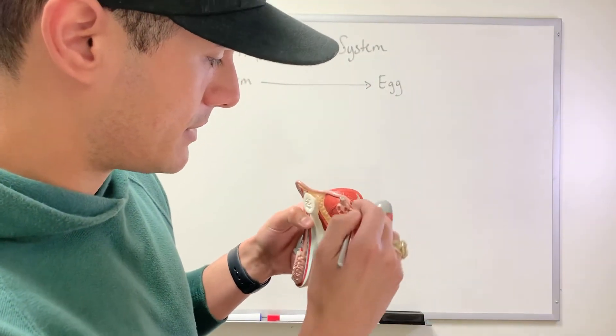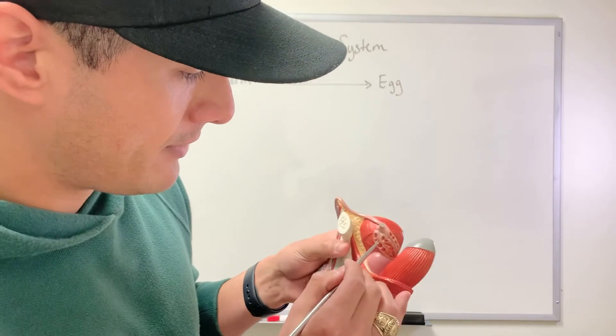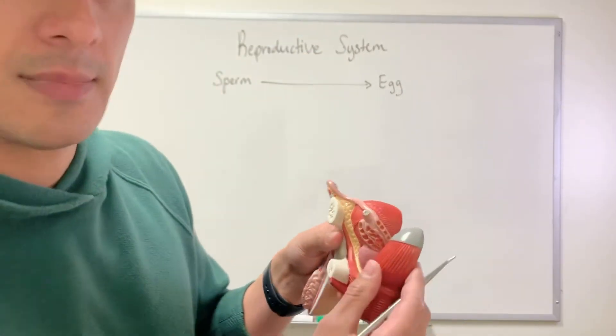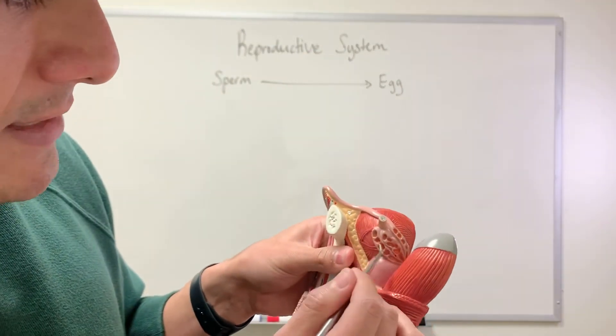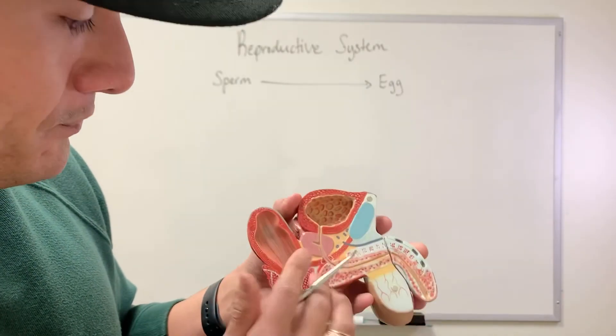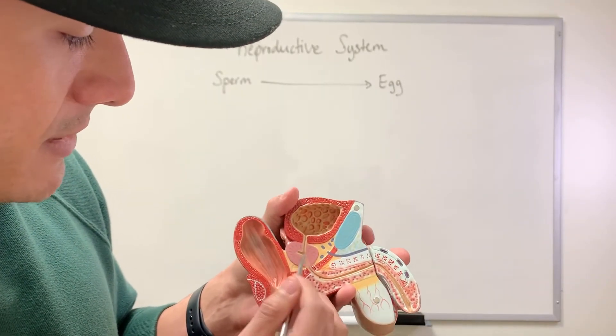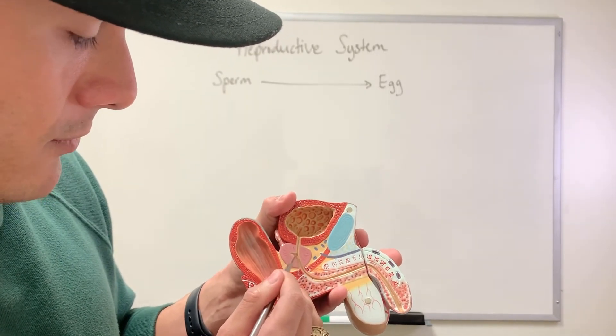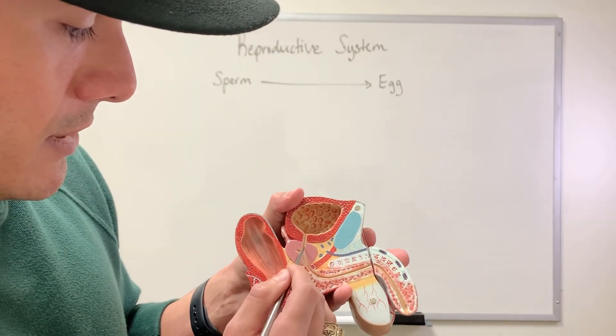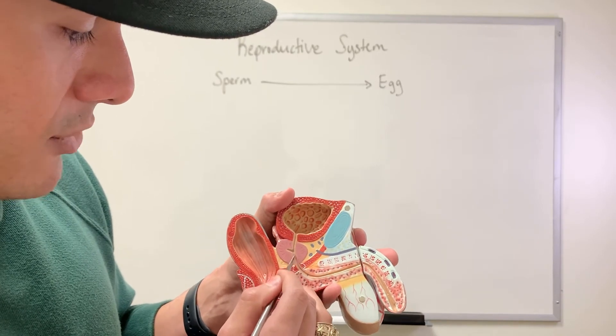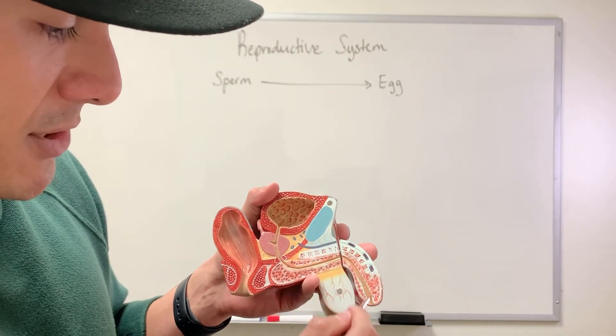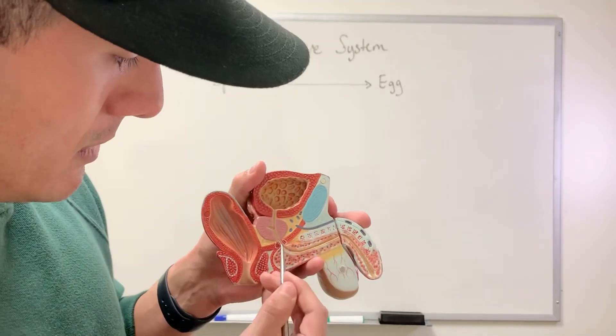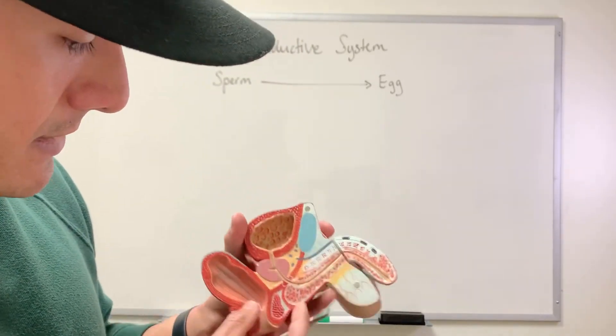All right, so the vas deferens is here, and then this is the ampulla of the vas deferens. This part is the seminal gland, seminal vesicle, and then this is the prostate gland. So this here is my prostate, and then this is the duct for it where all this fluid is coming from. So then this is the prostatic urethra, and then this is the spongy urethra. So the semen will travel through here and then it exits.